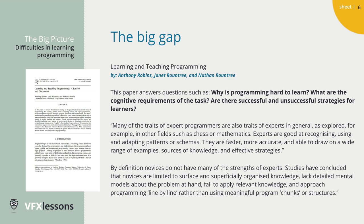In a paper called 'Learning and Teaching Programming' by Anthony Robbins, Janet Roundtree, and Nathan Roundtree, they answer questions such as: why is programming hard to learn, what are the cognitive requirements, and are there successful and unsuccessful strategies for learners? They say many traits of expert programmers are also traits of experts in general — as in chess or mathematics. Experts are good at recognizing, using, and adapting patterns or schemas; they are faster, more accurate, and able to draw on a wide range of knowledge. By definition, novices do not have many of these strengths — they are limited to surface and superficially organized knowledge and lack detailed mental models.